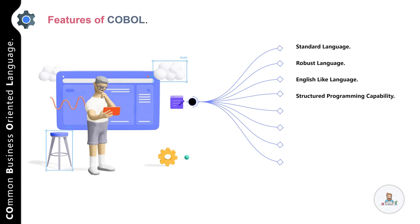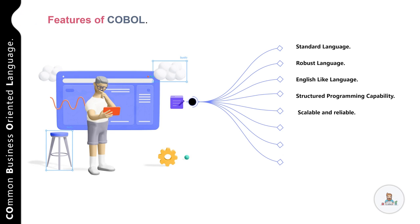The next feature is structured programming capability. Structured programming refers to a collection of techniques that help a programmer develop structured programs. A COBOL program is divided into different divisions, each with its own significance. For example, business logic is placed in the procedure division, which can be further divided into paragraphs or sections that can be executed or re-executed as required — essentially a top-down approach that is more readable and helps you understand the business logic clearly.